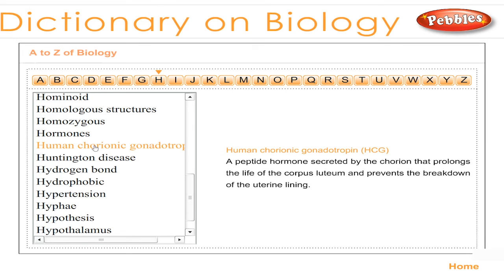Human chorionic gonadotropin, or HCG: a peptide hormone secreted by the chorion that prolongs the life of the corpus luteum and prevents the breakdown of the uterine lining.